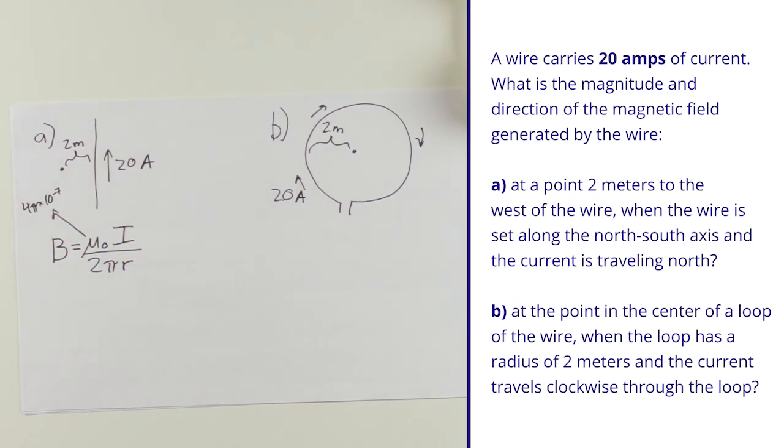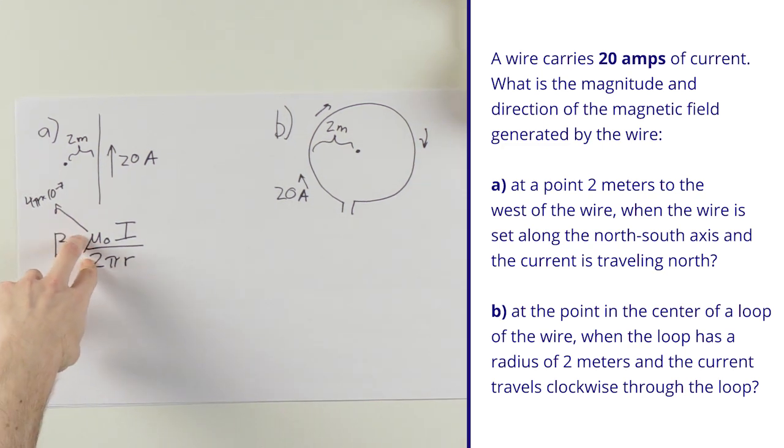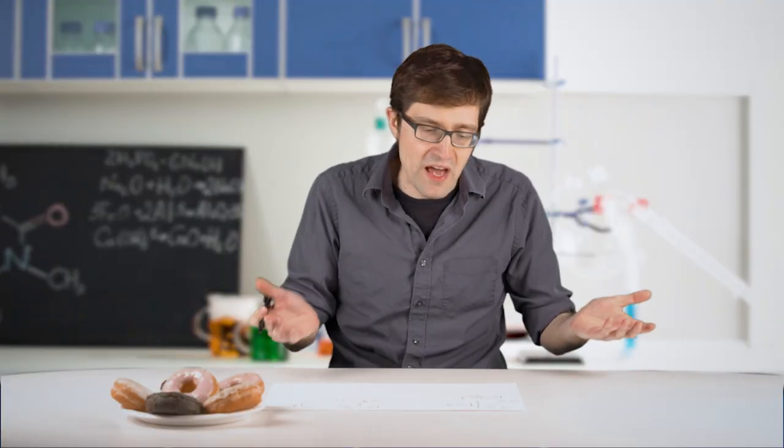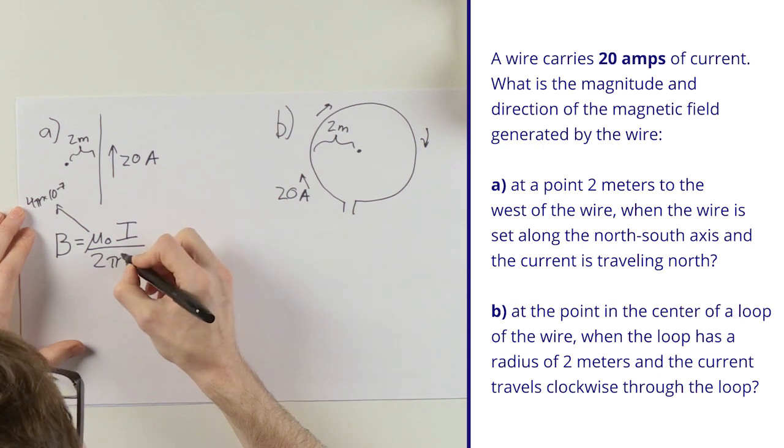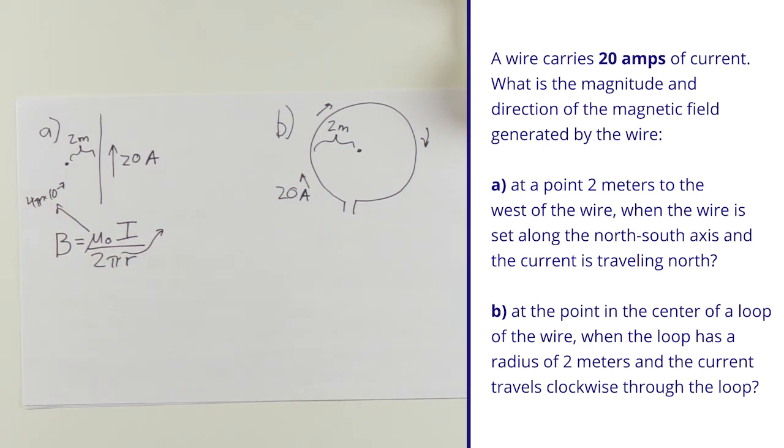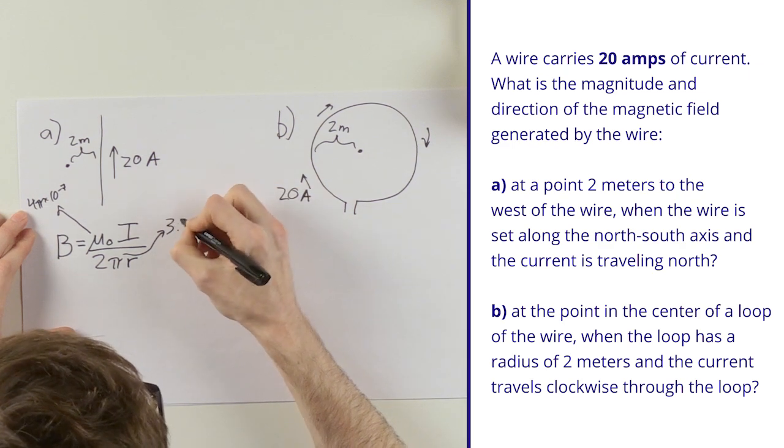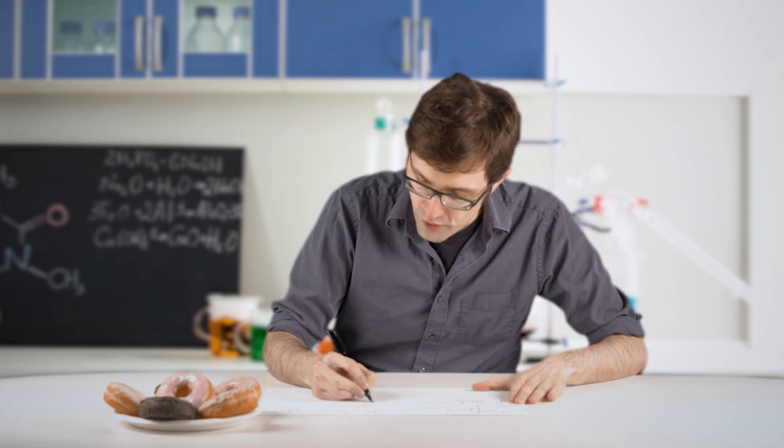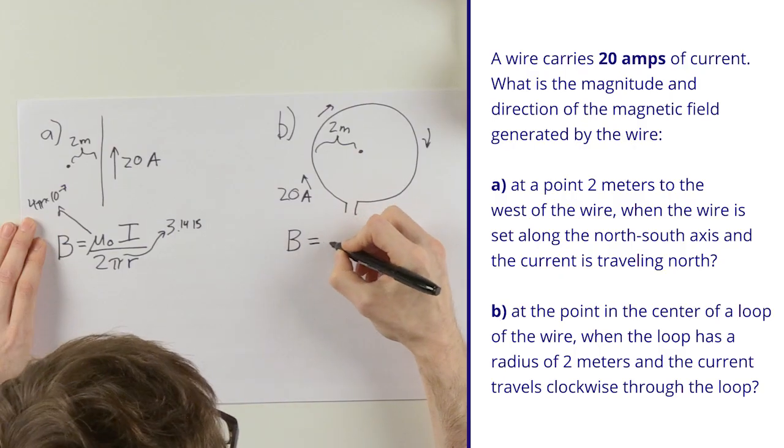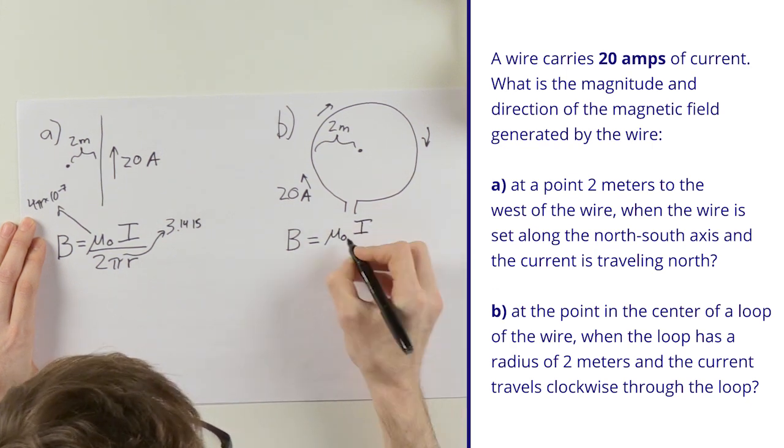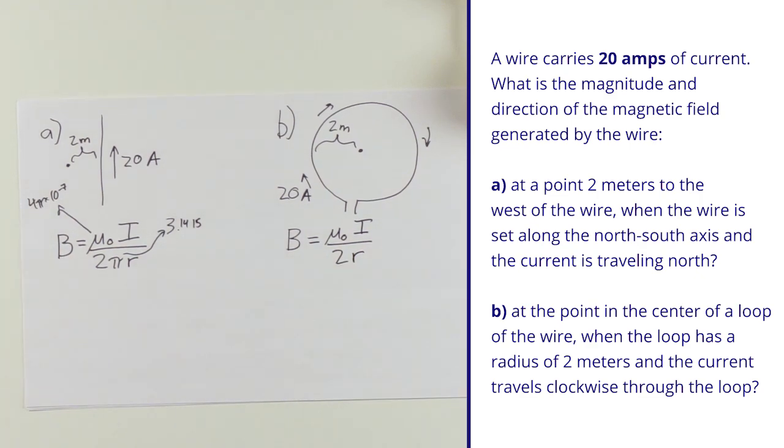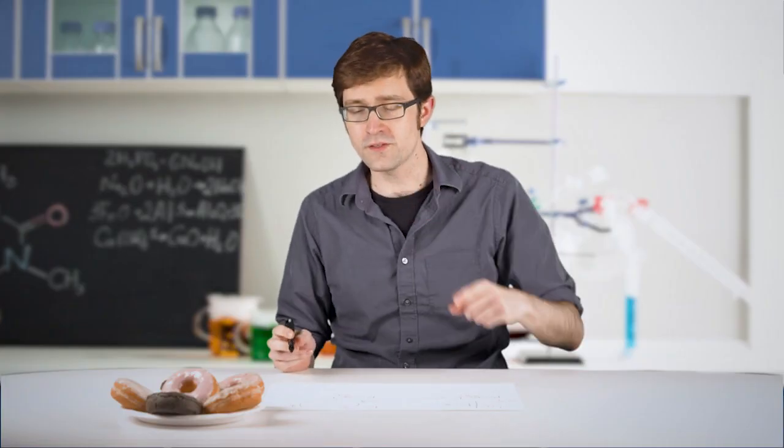Now if I ran into a question like this on the actual MCAT, they would probably give me this value if they needed me to actually do math with it. Pi is another constant, maybe a little more familiar: 3.1415926535, etc. The formula for the looped wire is actually almost the same: magnetic field equals a constant times the current over just 2r. There's no pi over here. Told you I was gonna talk about pies.